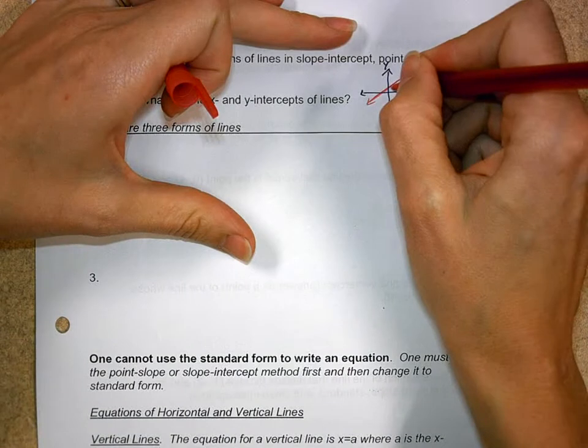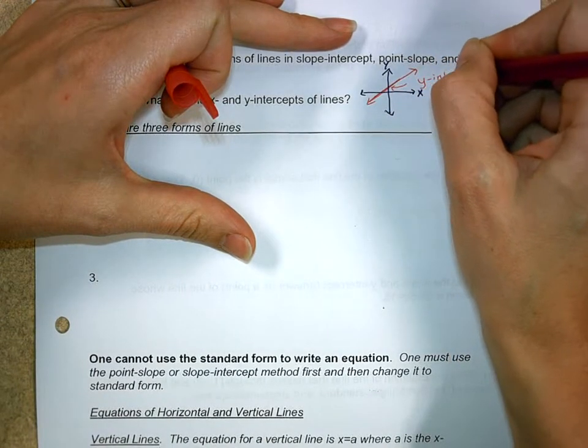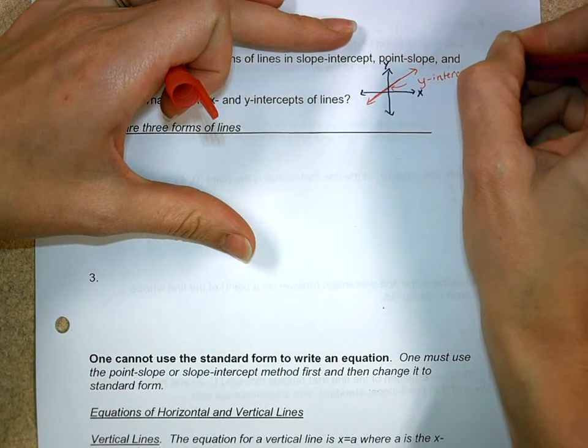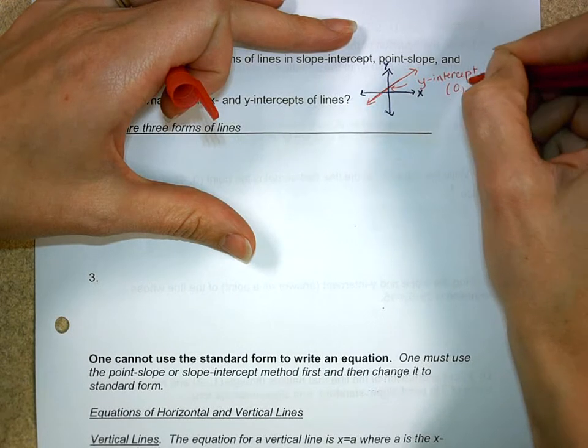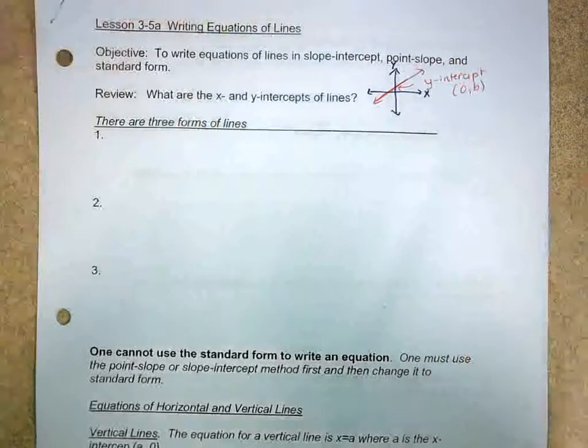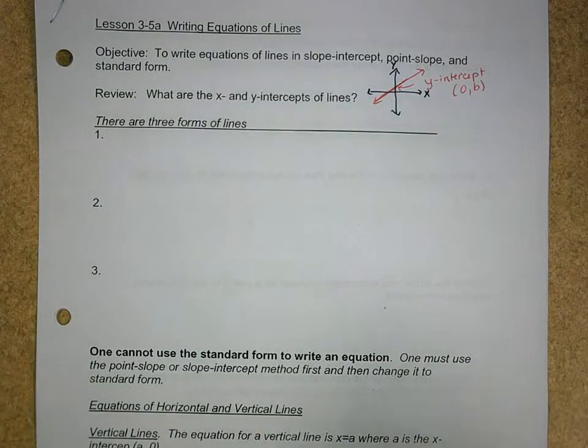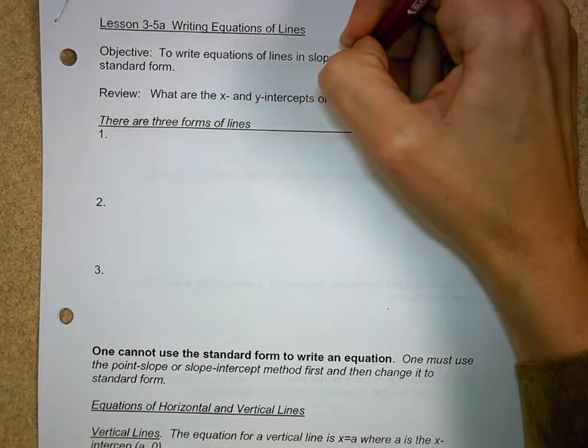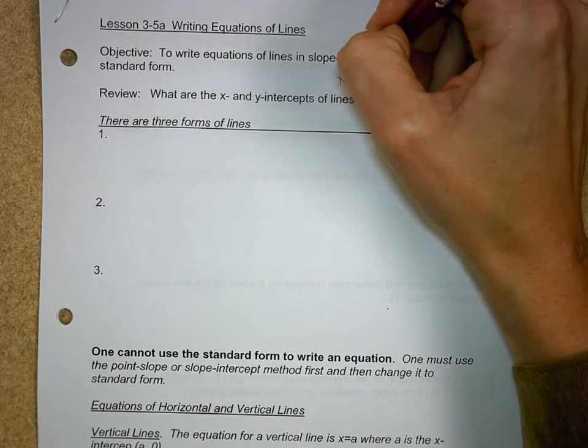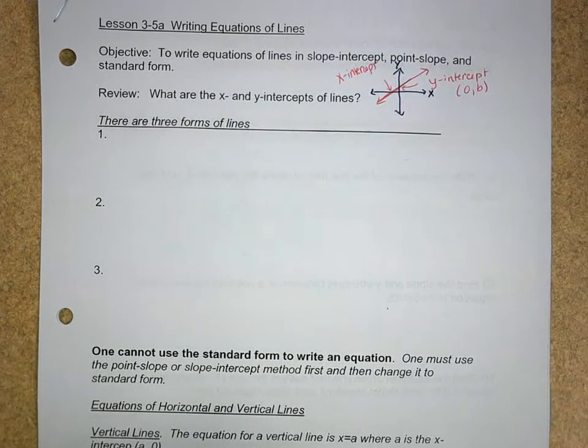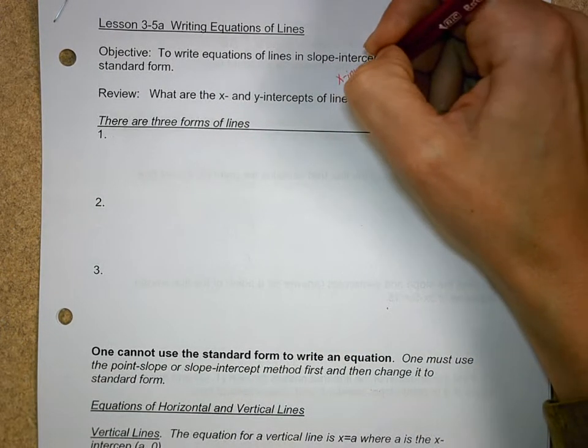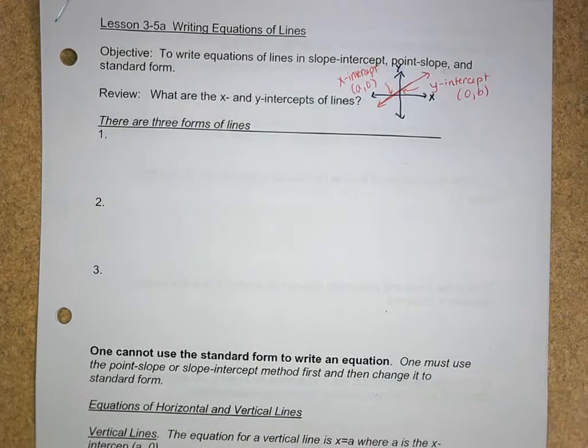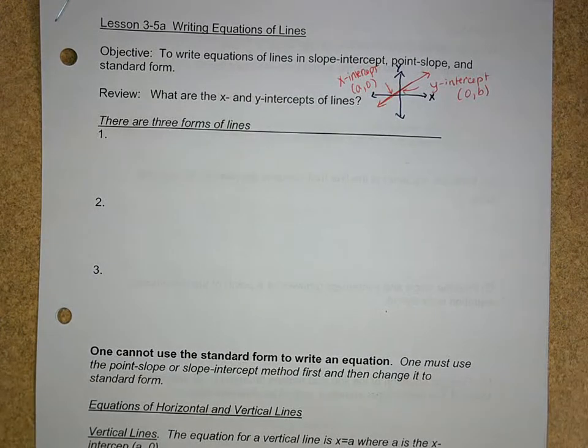we talk about the intercepts where it hits those axes. So right here, that's your y-intercept. That's where it intercepts the y-axis. And the ordered pair is always (0,b). x is always 0 on the y-intercept. Now, your x-intercept, that's when y is always 0. So we need to remember what the intercepts are, where they intersect the axes. And we're going to use that to help write equations of lines.